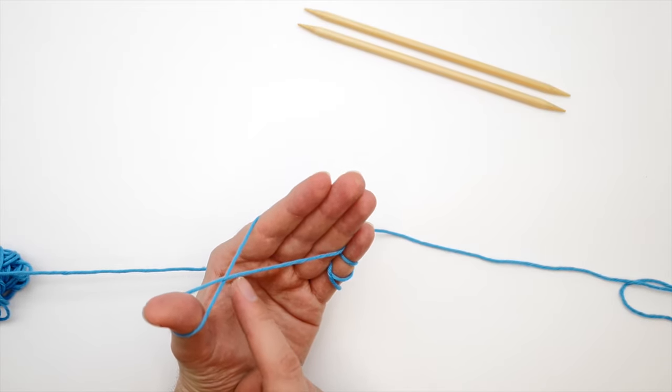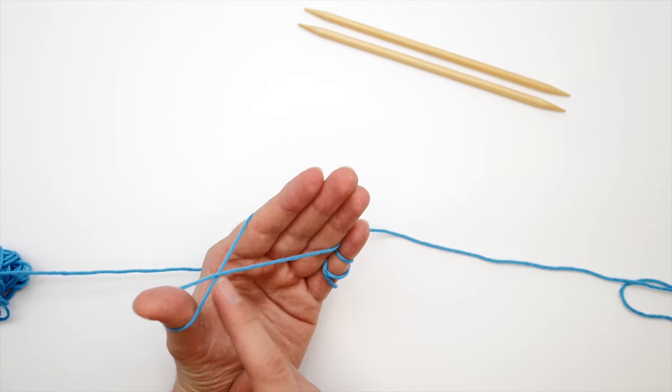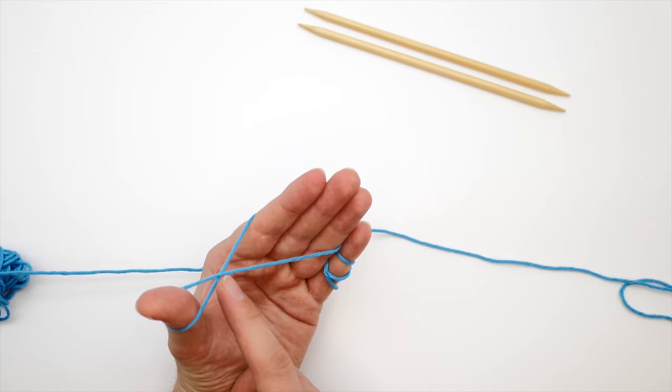What we did is we created a nice little loop here around your thumb and we're going to use this loop to cast on our stitches.